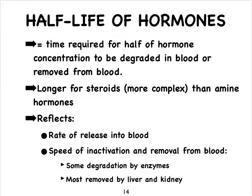Hormones are characterized by something we call a half-life. Half-life refers to the amount of time it takes for half of the concentration of a medication or hormone to be removed from the blood — either by the hormone being broken apart or removed from the blood by, say, the liver. Because steroids are much more complex, it takes much longer for them to be removed, so they have a longer half-life compared to amino acid-based hormones. Half-lives of hormones give us some idea of how fast hormones are released into the blood and how fast they are inactivated or removed — degraded by enzymes, or removed by the liver or kidneys.